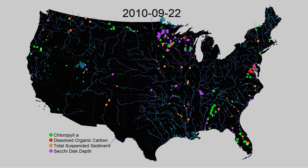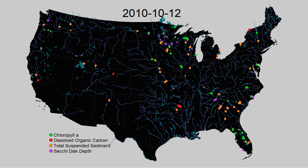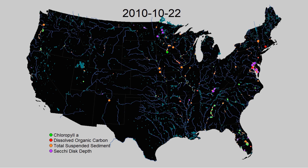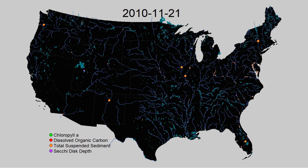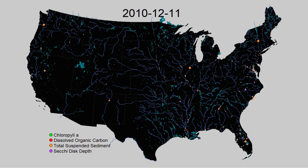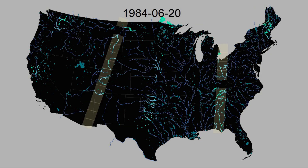For decades, scientists have known a way to overcome some of these problems and to dramatically increase the amount of data we have on inland waters. Because what is in the water changes its color, we can use satellite imagery to predict water quality based on a water body's reflectance, or its color.